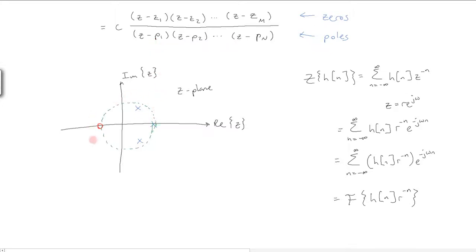Here I've marked a possible delineation of the region of convergence, and we'll say everything outside of this region converges. Therefore, we're able to evaluate H of Z at any Z point outside the circle, characterized by this R value.